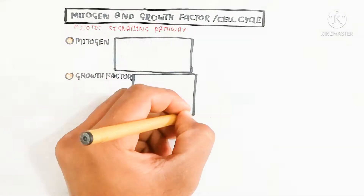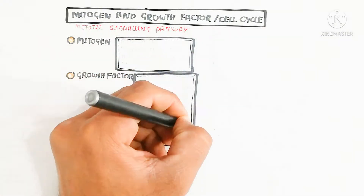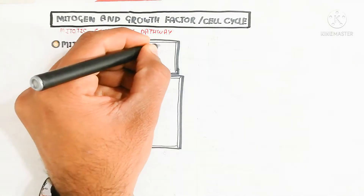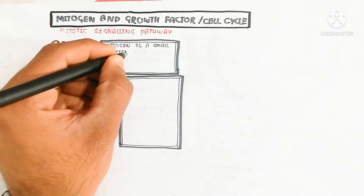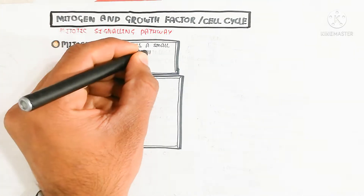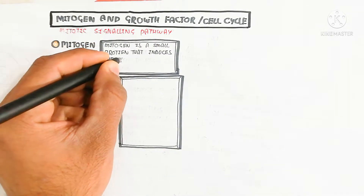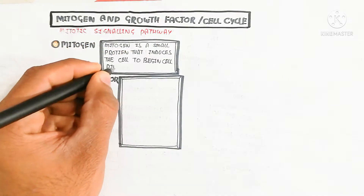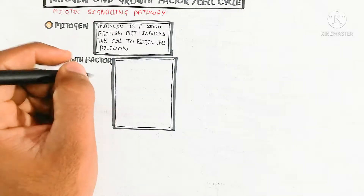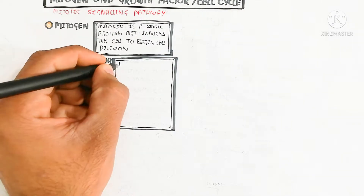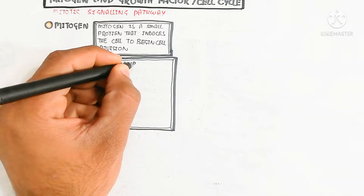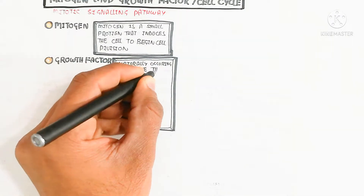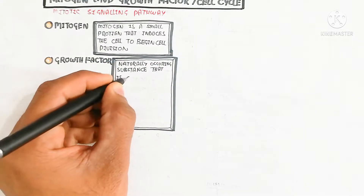The mitogen is a separate thing but it is similar to the growth factor. The differentiation is that the mitogen is a small protein that induces the cell to begin cell division, while the growth factor is a naturally occurring substance capable of stimulating cell proliferation, wound healing, and cellular differentiation.